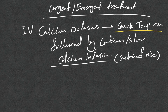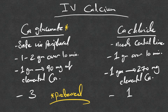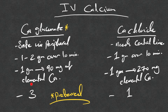Urgent or immediate treatment means inpatient IV calcium boluses, which lead to a quick but temporary rise in calcium for a few hours, followed by continuous or slow calcium infusion for a sustained rise. For IV calcium, we have calcium gluconate or calcium chloride. Calcium gluconate is preferred because it's safe to give via peripheral access, while calcium chloride needs a central line. Give 1 to 2 grams over 10 minutes. Elemental calcium is 90 mg per gram of calcium gluconate, and triple that — 270 mg — in calcium chloride.